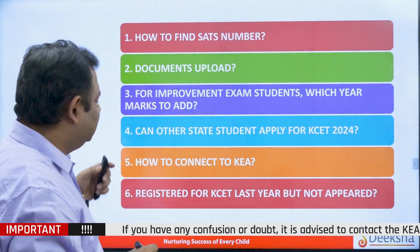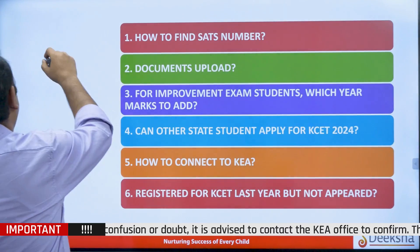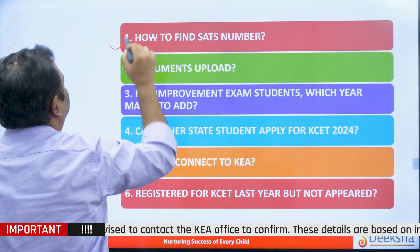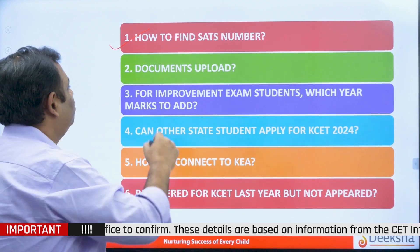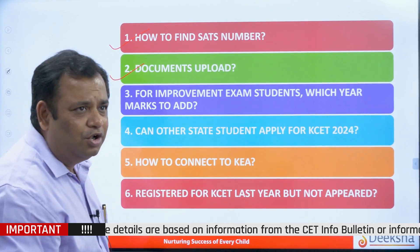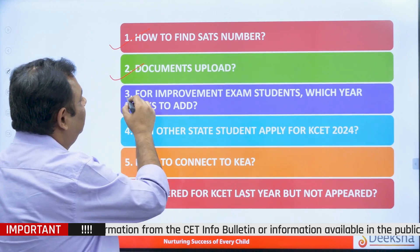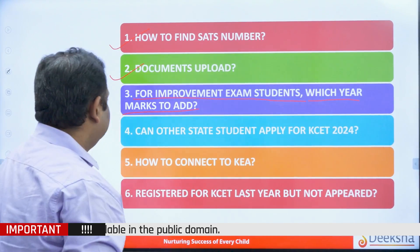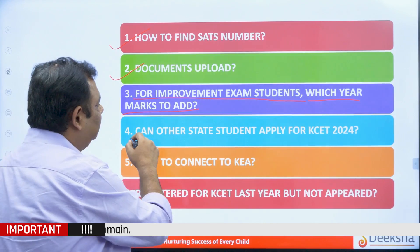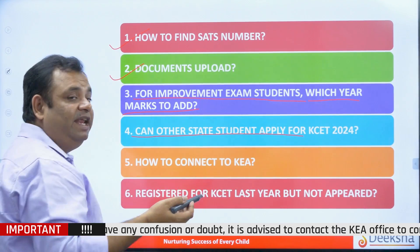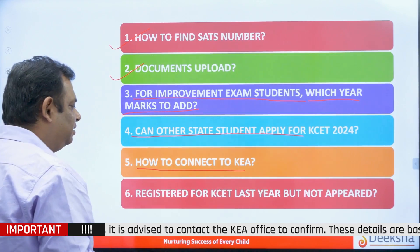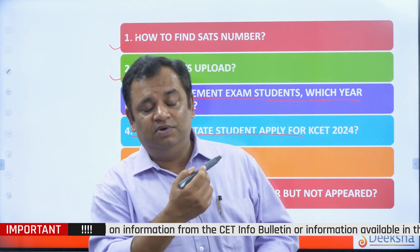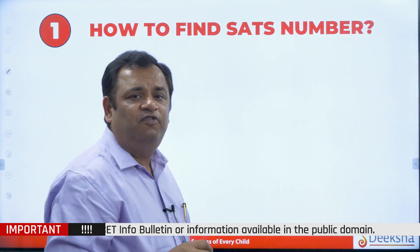So the majority of questions are six in kind. One is how to find your SATS number — many students have asked this question. Then there were questions about documents upload, what kind of documents to upload, one document or multiple documents. There were questions where students asked that for improvement marks, which year marks to add or what mark sheet to put in. Another question was, can other state students apply for KCET? How to connect to KEA? And there was another question about students who appeared or registered for KCET last year, what to answer in such questions being asked in the forms. So here we have the first question: how to find the SATS number?